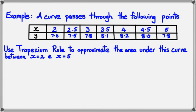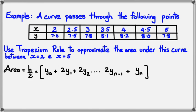We know the general equation for trapezium rule. The first thing we need to do is figure out what h is. In this scenario, h is 0.5. The reason is if you look at all the x values, they're all increasing by 0.5, so h equals 0.5.